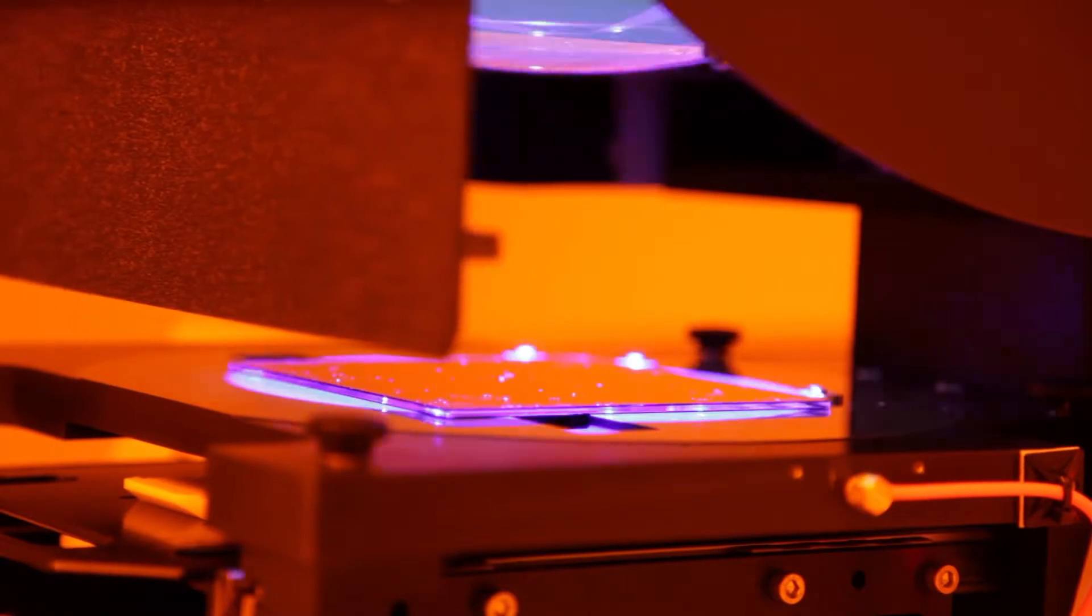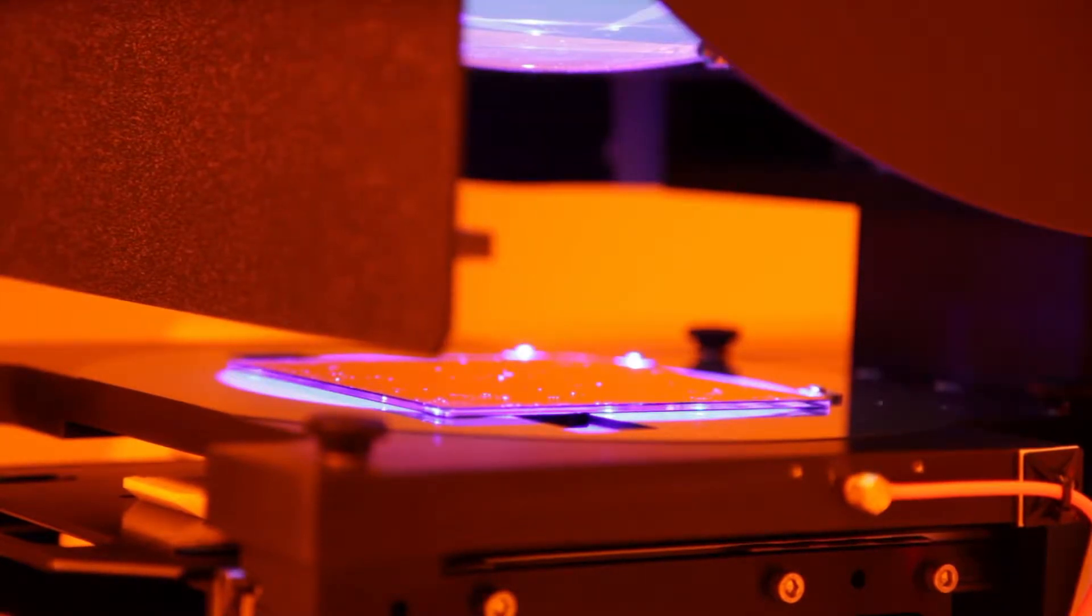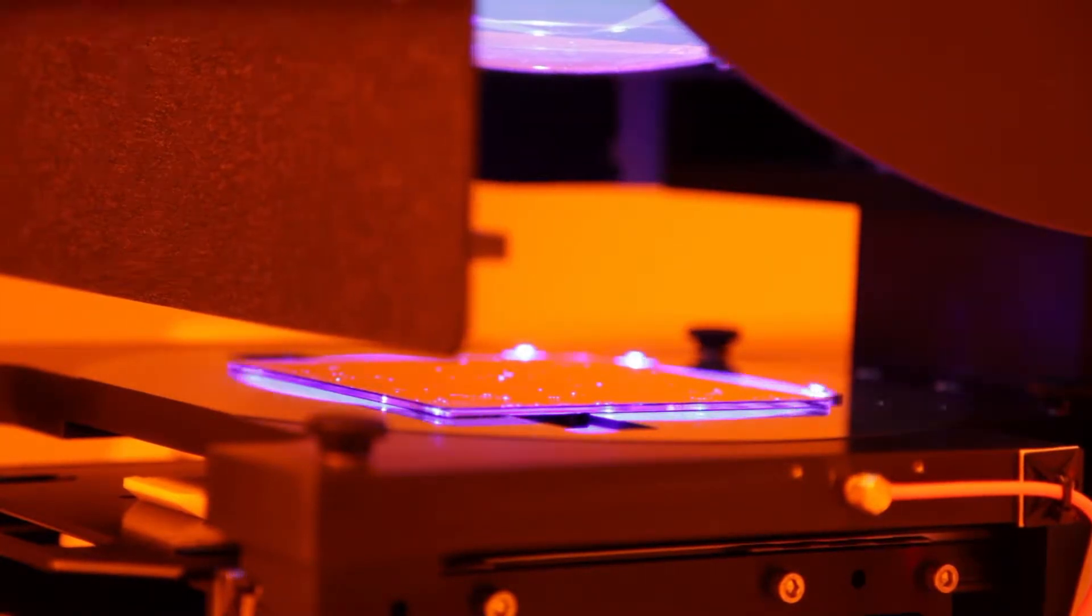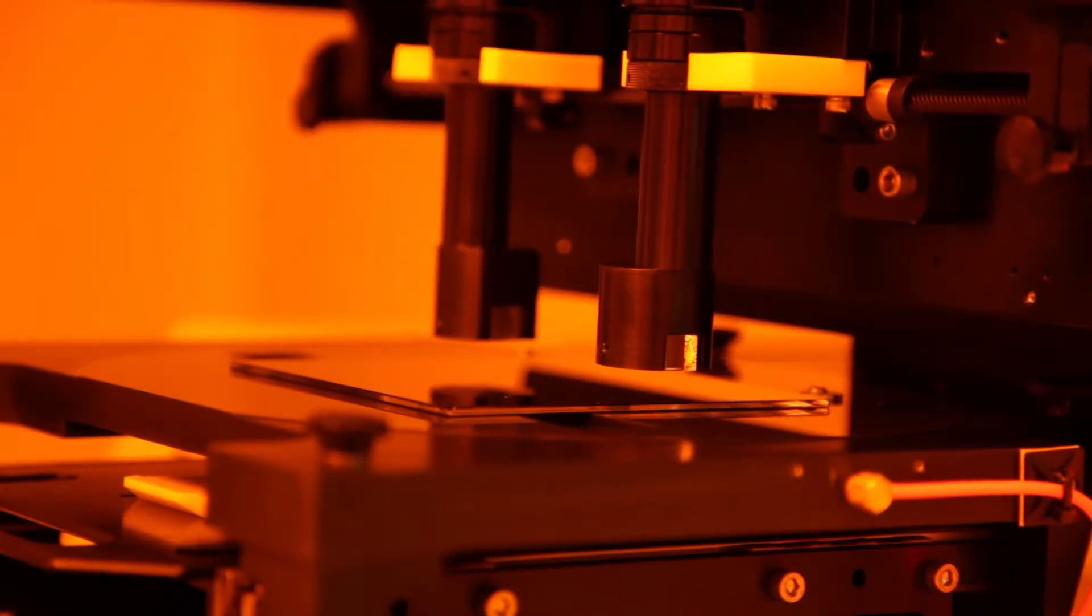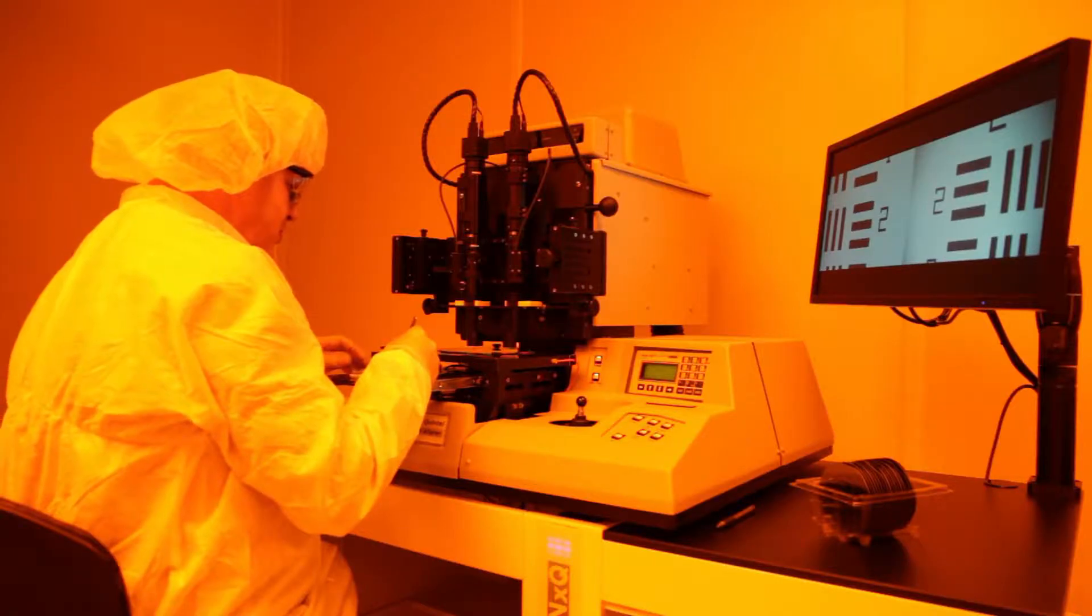With photolithography, exposure of a thin layer of photoresist to certain wavelengths of light causes a chemical change. After developing, the pattern made by exposure remains and the rest of the resist is washed away, analogous to photography.